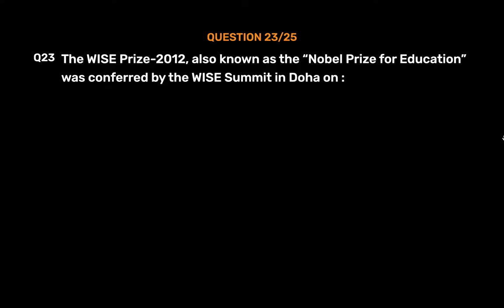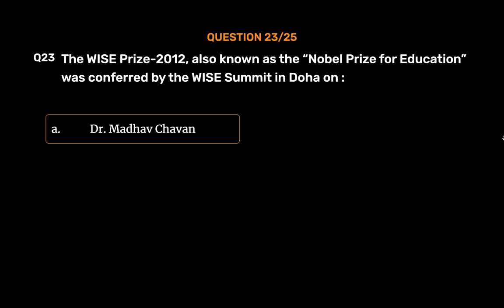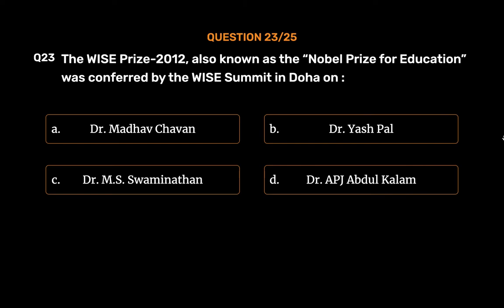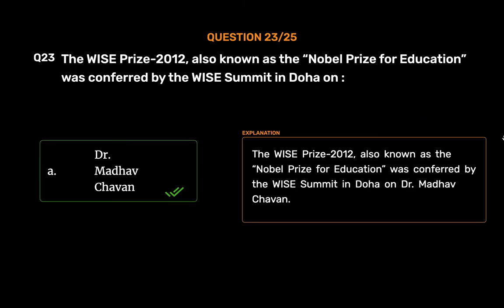Question No. 23. The WISE Prize 2012, also known as the Nobel Prize for Education, was conferred by the WISE Summit in Doha on: Option A. Dr. Madhav Chavan. Option B. Dr. Yashpal. Option C. Dr. M.S. Swaminathan. Option D. Dr. A.P.J. Abdul Kalam. The correct answer is Option A, Dr. Madhav Chavan. The WISE Prize 2012, also known as the Nobel Prize for Education, was conferred by the WISE Summit in Doha on Dr. Madhav Chavan.